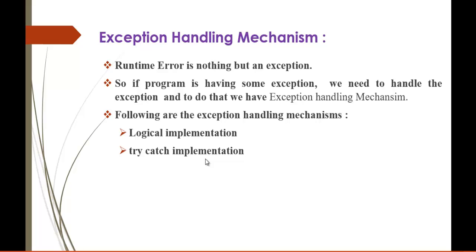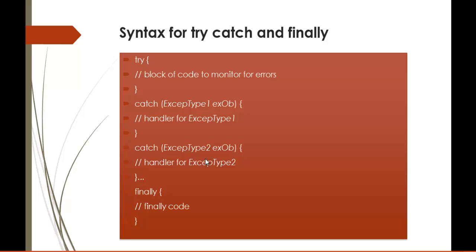The other implementation which is very important is try-catch implementation — this is the actual exception handling mechanism. The keywords in exception handling are try, catch, and finally. Try block is the block where you place the piece of code which is going to cause an error. Catch block tells you what type of error you are facing — it gives a clear description of the error. Finally block executes irrespective of whether your program has an error or not.